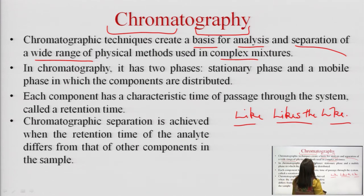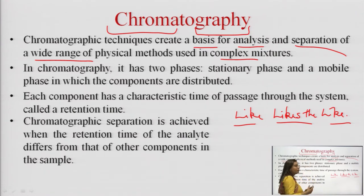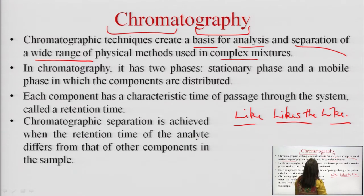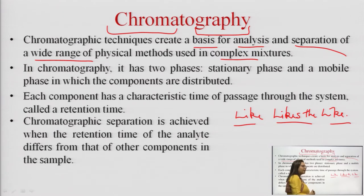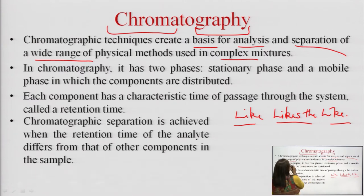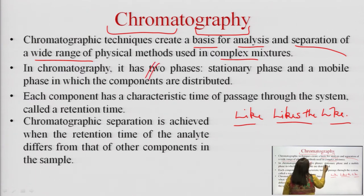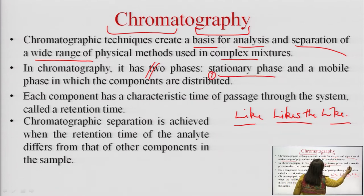This term was derived from the very first experiment conducted by a Russian scientist to separate the plant colouring pigments of the leaf using N-hexane. In chromatography, there are two phases: number one, the stationary phase, and number two, the mobile phase.